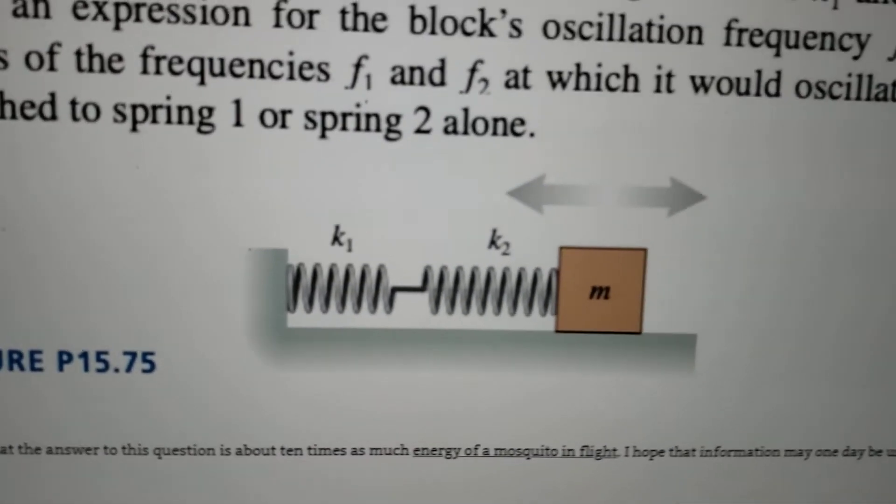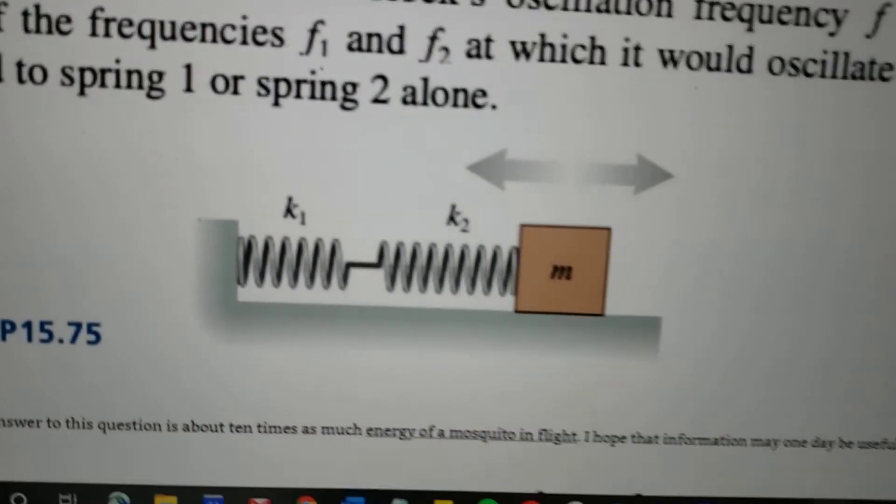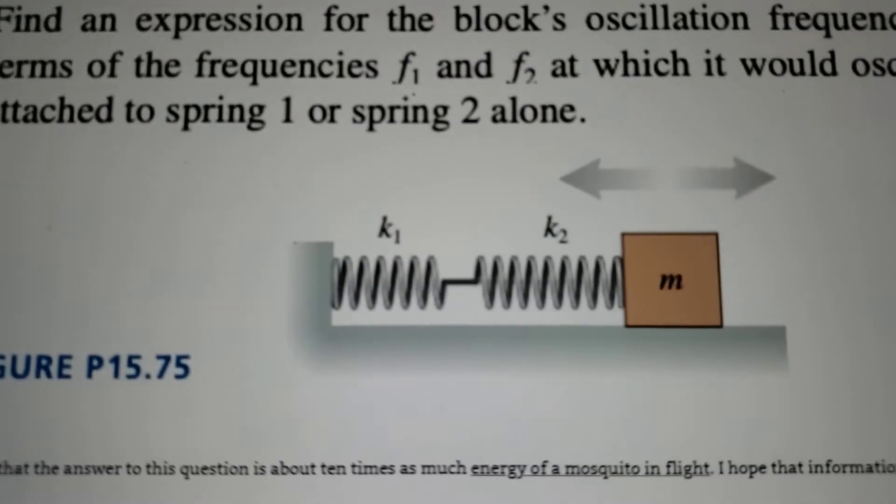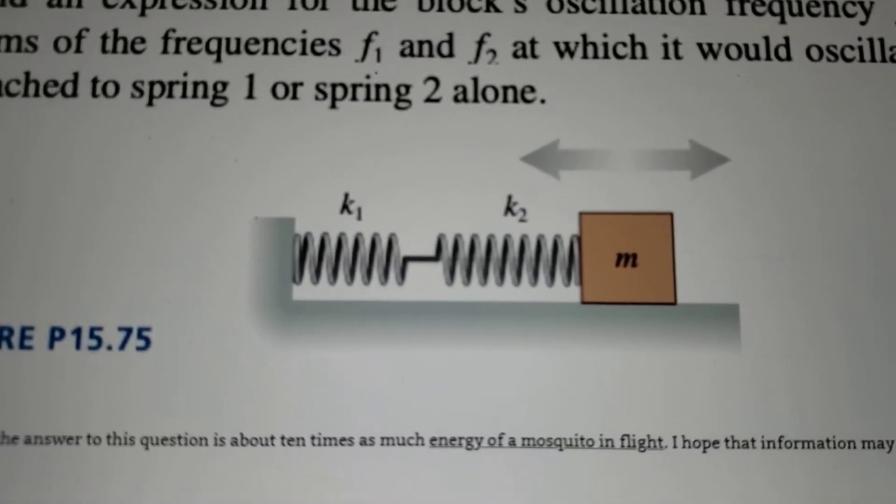So this is the system we have here - a mass on the end of two springs attached end-to-end, both with different spring constants.